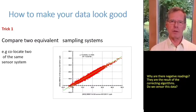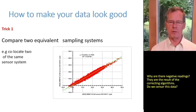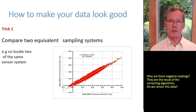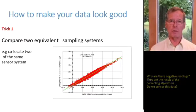Let's now have a look at how we can make our data look better and how some people make their data look worse. Making your data look better — trick number one: compare on the x and y axes equivalent sampling systems. Here, for example, there's data of electrochemical NO2 sensors, both effectively the same sensor technology measuring co-located in the same time and the same location. And you get an incredibly good R-squared of 0.95. That shows that the sensors are repeatable with each other, but it doesn't show the true quality of the data relative to a reference system.